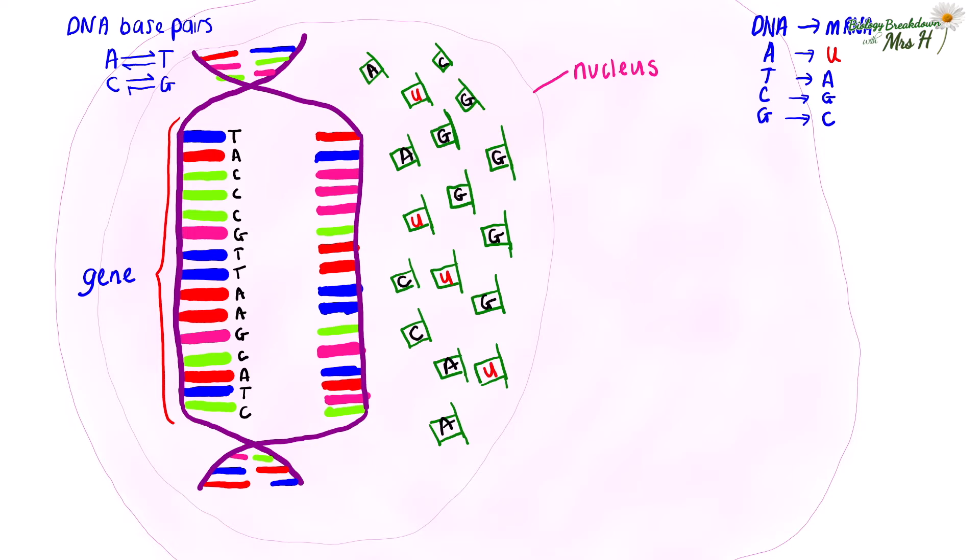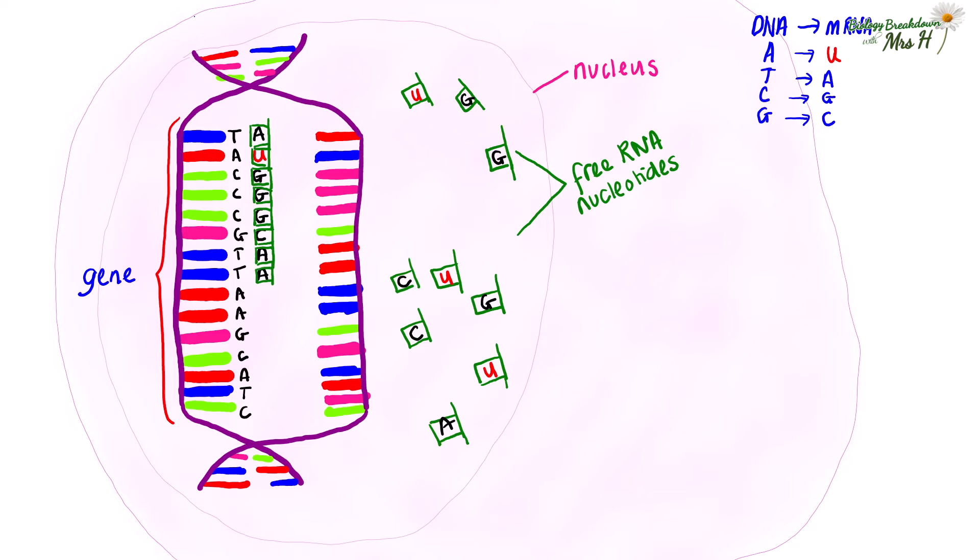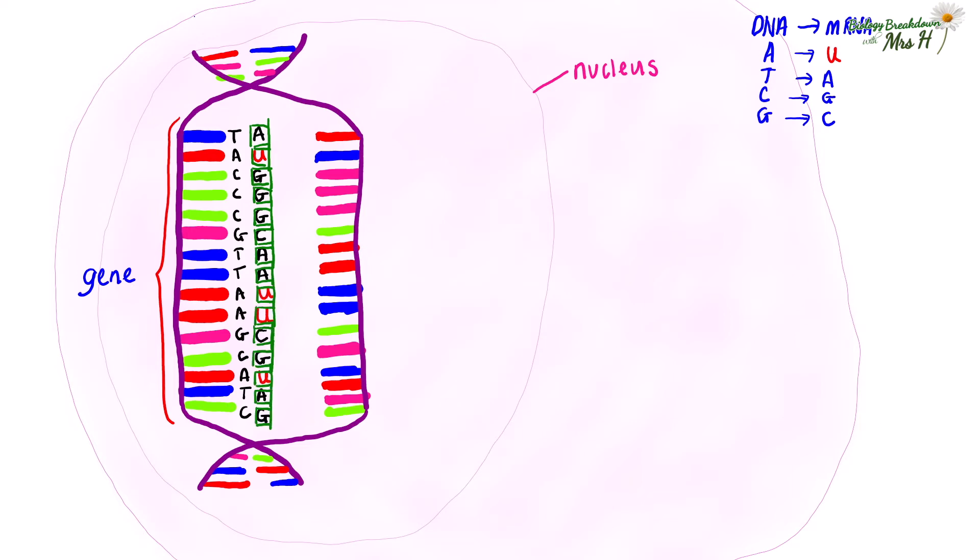The base pairing rules are the same as before but obviously because there's no T, an A will have to pair up with a U. The base of the free RNA nucleotides pair with the bases on the template DNA strand forming a new single-stranded molecule called mRNA.